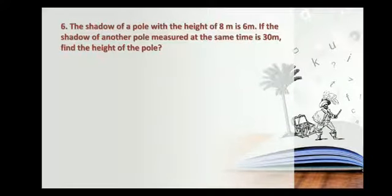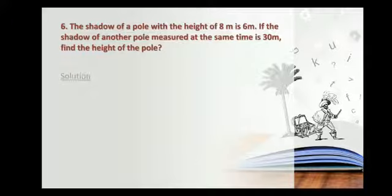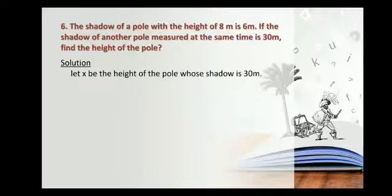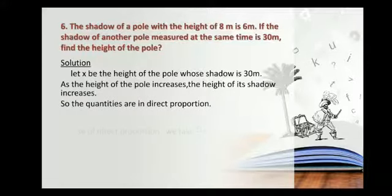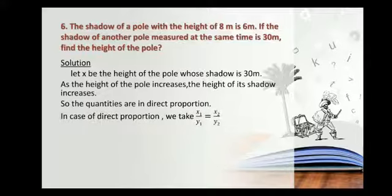The shadow of a pole with height 8 metres is 6 metres. If the shadow of another pole measured at the same time is 30 metres, find the height of the pole. When the height of the pole is increased, the height of the shadow is also increasing because it is measured at the same time. So we take X as the height of the pole whose shadow is 30 metres. As the height of the pole increases, the height of its shadow will also increase, so the quantities are in direct proportion. We take X1 by Y1 is equal to X2 by Y2.